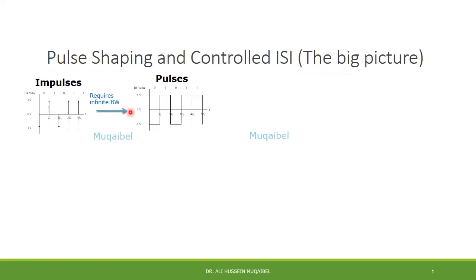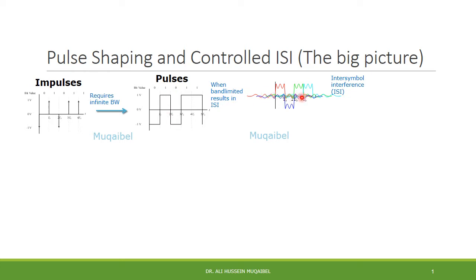Moving from impulses to the next option, which is square pulses: the spectrum will still be infinite. However, it can be approximated, and when the signal goes through a channel, we will have what we call ISI. Instead of the pulses taking a certain time, they will expand in time, causing inter-symbol interference. Pulses still have the problem of infinite bandwidth, and since the channel is band-limited, cutting the bandwidth results in ISI.